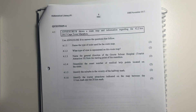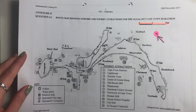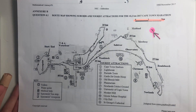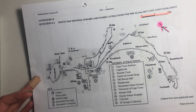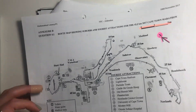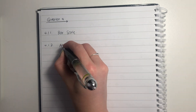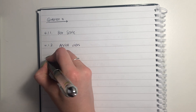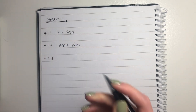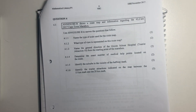Then it says, what type of view is represented on this route map? What it means by that is, when I'm looking at this, am I looking at this from the top or from the side? You can see that you have a top view here. You can also call that an aerial view. These are just learned terminology words. Nothing done up until now has been particularly difficult, but you need to know these terms.